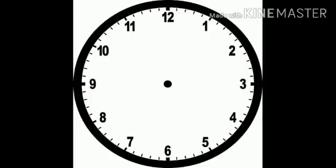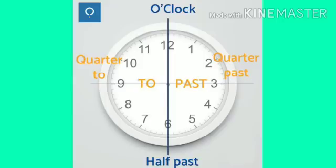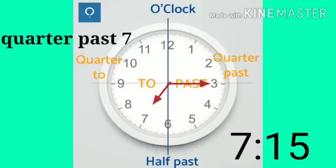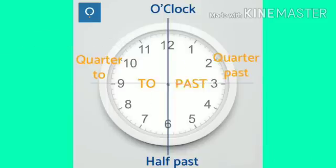Let's understand with the help of examples. When the hour hand moves from number 5 to number 6, the minute hand completes one round. As we all know, there are 60 minutes in an hour. We divide our time in quarters and halves. At minute 15, we say it's quarter past. So when it's 7:15, we say it's quarter past 7, or when it is 1:15,